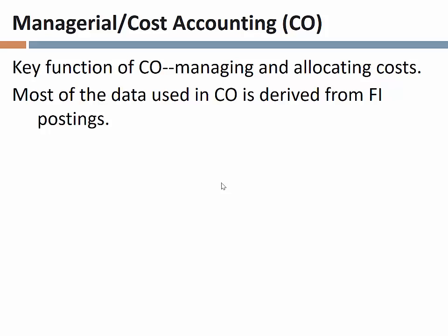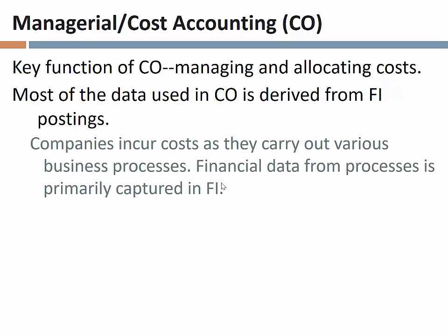In terms of the information handling portion of cost accounting, all of the details of our financial transactions are captured in financial accounting. So all cost accounting has to do in order to get the data it needs is leverage the information already in the system for financial accounting. Companies engage in various business processes, and as those processes occur, costs are incurred. Those costs would be captured in various financial accounting documents, or FI documents, that are kicked out periodically by steps in our business processes.